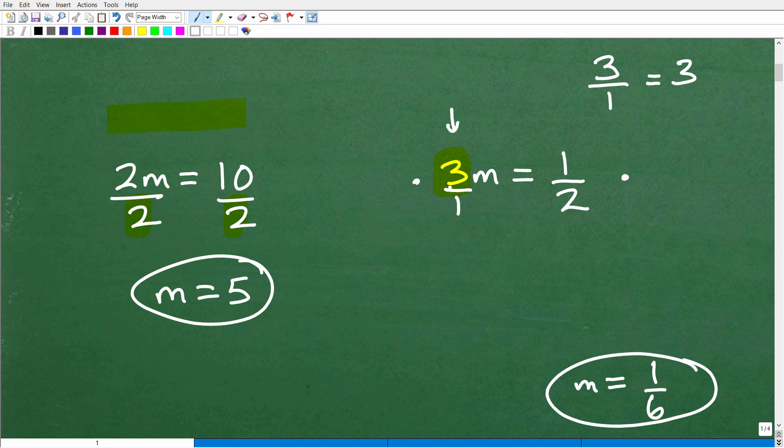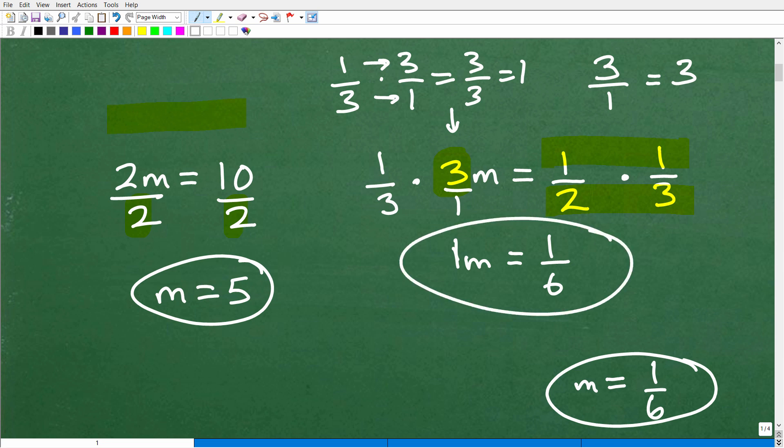Now, the reciprocal means that you just flip this number. So 3 over 1, the reciprocal would be one-third. Now, if I multiply the left-hand side by one-third, you need to multiply the other side, the right-hand side, by one-third. Because one-third times 3 over 1 is, let's just go ahead and do this really the long way. One-third times 3 over 1 is the same thing. Remember, you multiply cross. It's the same thing as 3 over 3 or 1. So this right here becomes 1m or just m. And, of course, this is going to be equal to one-sixth. Remember, when you're multiplying fractions, you simply multiply the respective numerators and denominator. So the answer is 1m is equal to one-sixth or m is equal to one-sixth. And that's what we got previously.